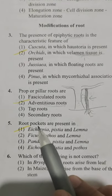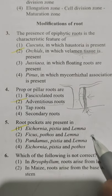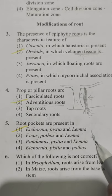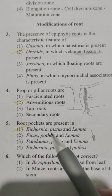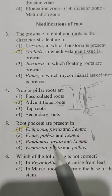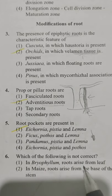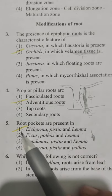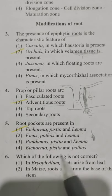Next: root pockets are present in — Option 1 Eichhornia, Pistia and Lemna; Option 2 Ficus, Pothos and Lemna; Option 3 Pandanus, Pistia and Lemna; Option 4 Eichhornia, Pistia and Pothos. Root pockets are loose finger-glove-like structures present at the tip of aquatic roots in floating aquatics. So Option 1 is correct: Eichhornia, Pistia and Lemna.